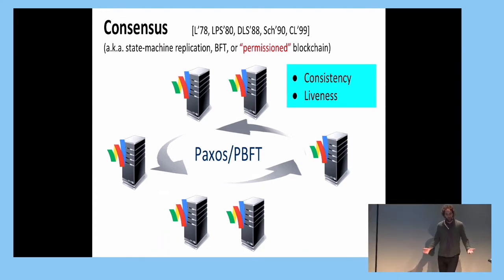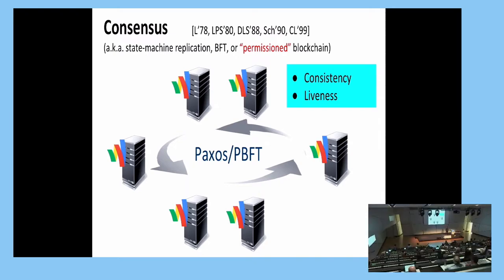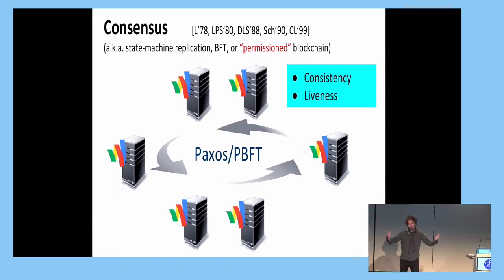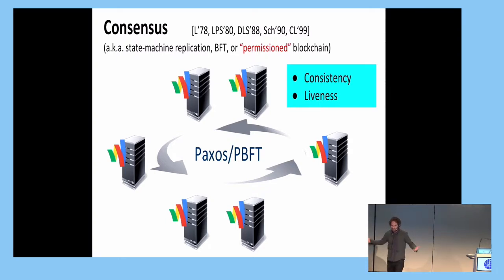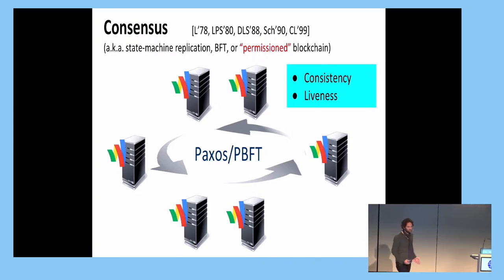This is in fact a very old problem that we have studied since basically 1978. We have a set of nodes — say five of them — and these nodes would like to agree on an ever-growing list of transactions. This is what we call today a permissioned blockchain, but as I said this has been around for a long time with names such as state machine replication, BFT, and so on.